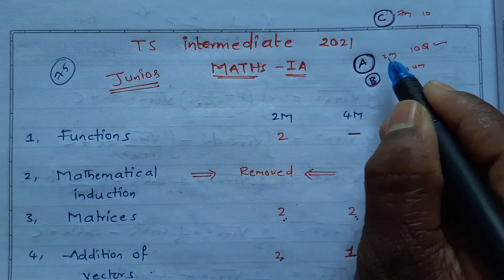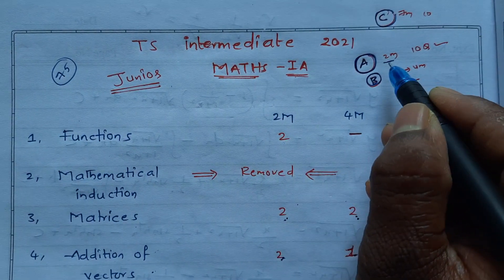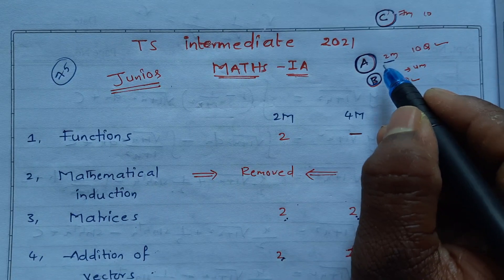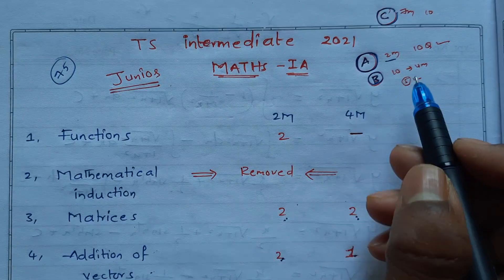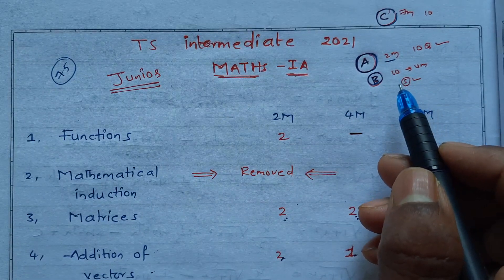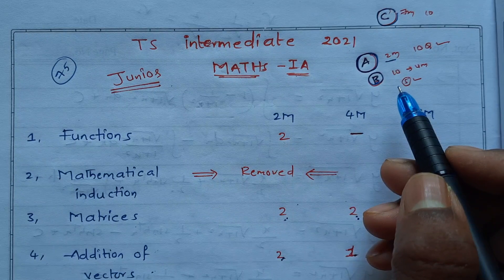Section A has 10 questions, out of 10 all 10 must be answered. Each one carries two marks, so 20 marks total. Section B has total 10 questions, out of 10 questions, four questions must be answered.